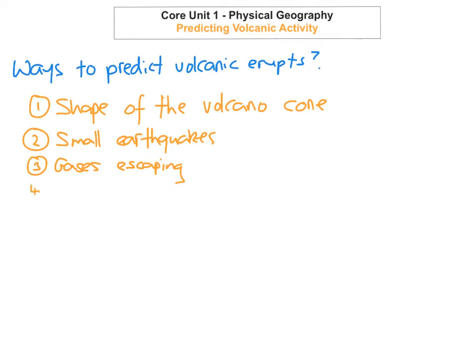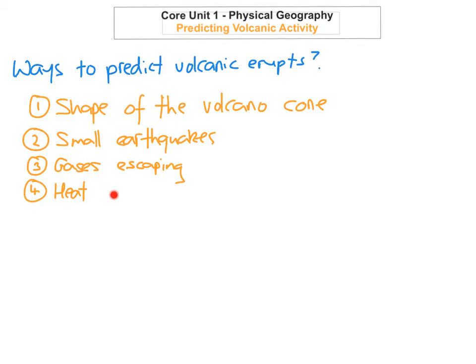The fourth way scientists can predict volcanic eruptions is by observing the heat of the surrounding areas of the volcano. If a volcano is about to erupt, the magma will rise towards the surface. Because the magma is extremely hot, this will increase temperatures in the surrounding rock and may cause snow or ice on the volcano to melt, triggering floods or lahars. This could be a big indication that magma is coming towards the top of the crater and the volcano is about to erupt.